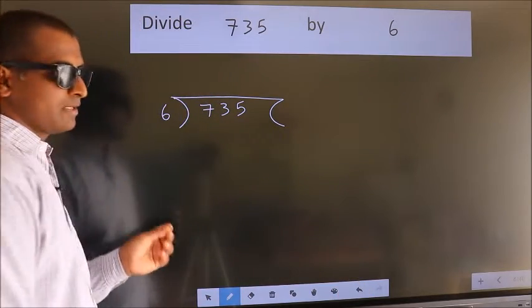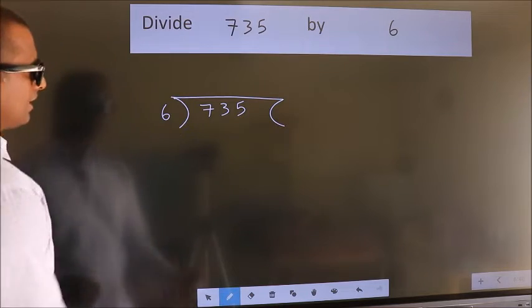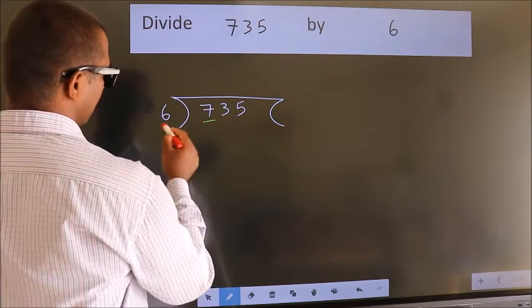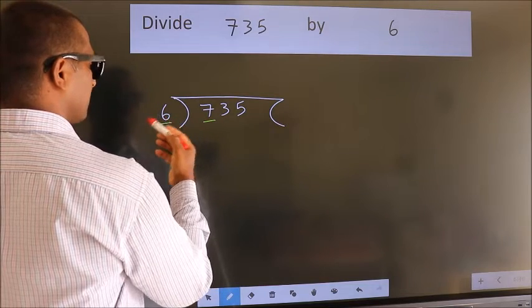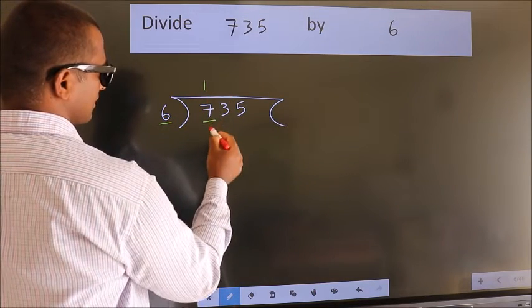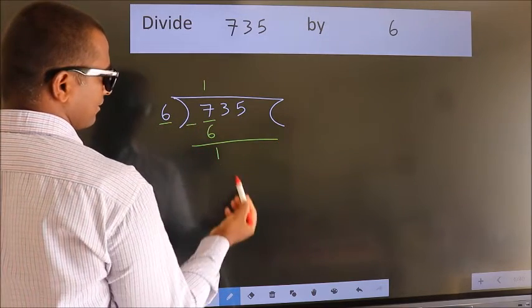This is your step 1. Next, here we have 7, here 6. A number close to 7 in the 6 table is 6 times 1, which is 6. Now we should subtract. We get 1.